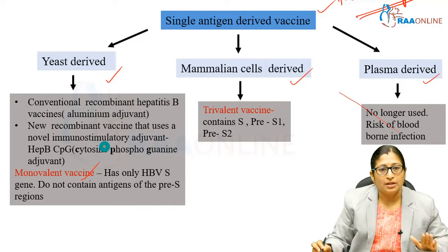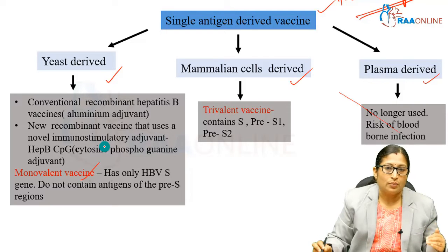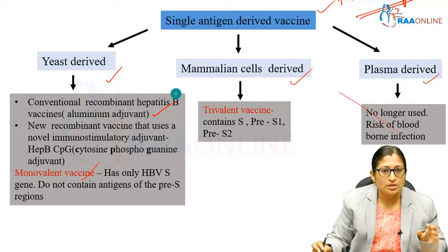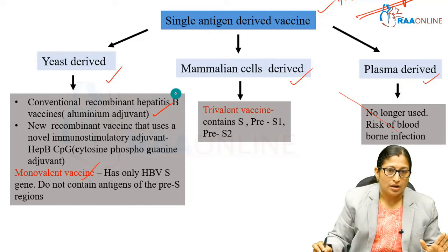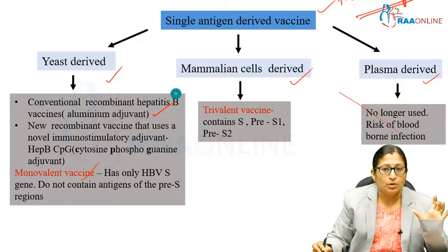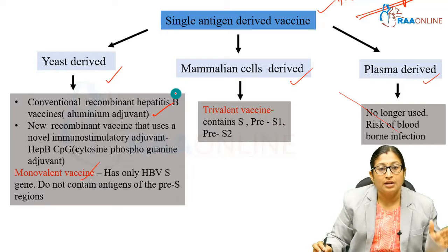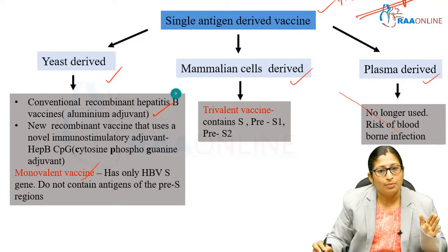In the yeast-derived vaccines, you have the conventional recombinant hepatitis B vaccine, which has been used for a longer time, and the latest addition is a new recombinant vaccine which uses a different adjuvant. The conventional recombinant hepatitis B vaccine uses the aluminum adjuvant, while the new recombinant vaccine uses a novel immunostimulatory adjuvant called CPG — cytosine phosphoguanine — which produces an accelerated immune response. Remember, both of these are monovalent vaccines.